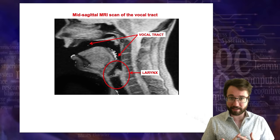A fricative is different from a stop. In a stop, you create total blockage and airflow builds up — you can't stretch out the 't' sound forever. In a fricative, you can continue the sound indefinitely because of the continuous airflow with friction through the constriction. So we say, for example, that the sound V is a labiodental fricative: the place of articulation is labiodental (lips and teeth), and the manner of articulation is fricative — a continuous sound.